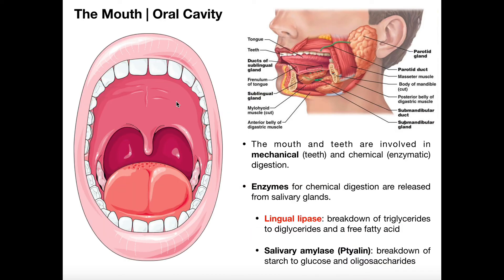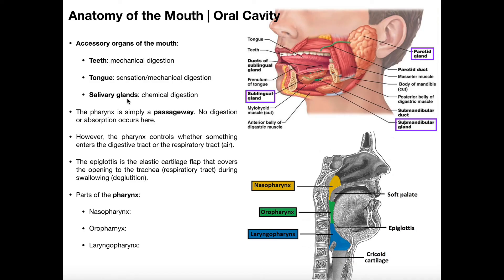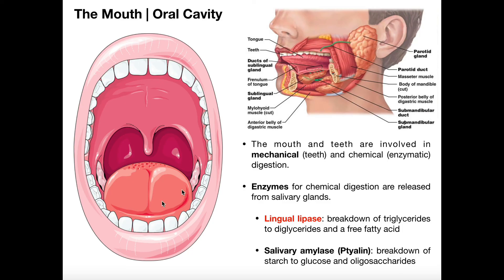Let's do a quick recap of the oral cavity. We've got the mouth as a whole with three accessory organs: the teeth, the tongue, and the salivary glands — both intrinsic and extrinsic. We're going to have both mechanical and chemical digestion. The chemical digestion is more minor, really just consisting of salivary amylase. But the mechanical digestion is much bigger here in the mouth. The teeth chew the food, break it up, increase its surface area for enzyme access later in the digestive tract. Once we break down that food, we mix it with saliva and all that stuff, and it becomes this bolus — that is called a bolus.